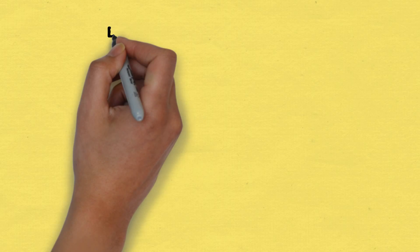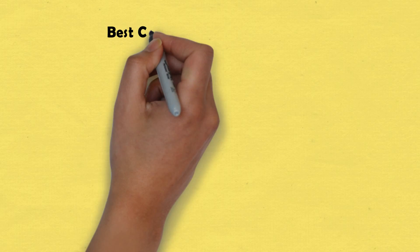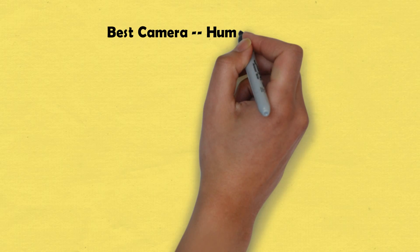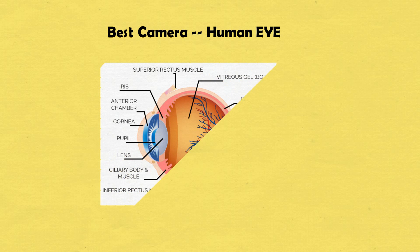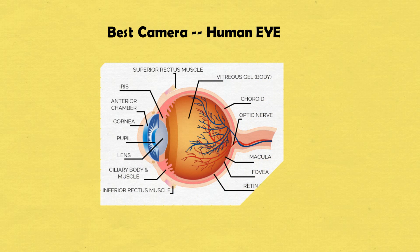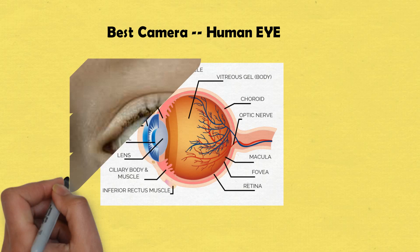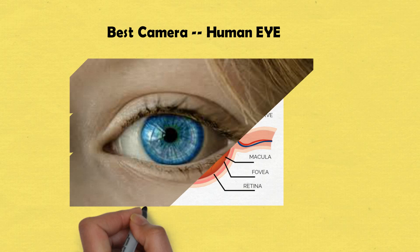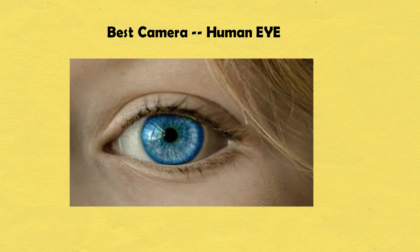Do you know that the human eye, through adjustment of the iris and other methods, constantly adapts to a broad range of luminance present around us? The brain continuously interprets this information so that we can see in a wide range of light conditions. Eyes are the best cameras that we have.